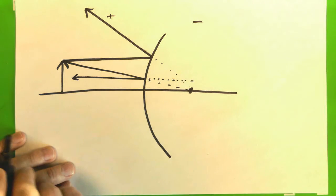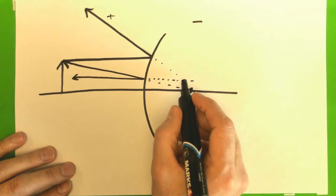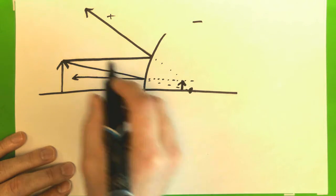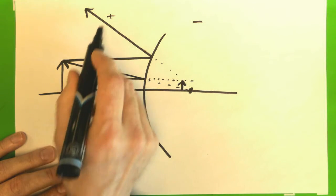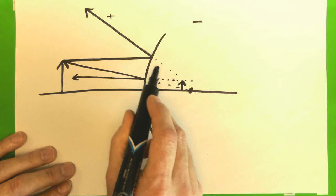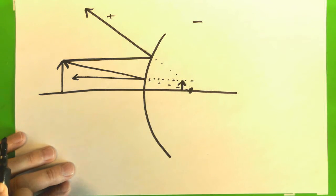And it would then converge, appearing as if it's coming from there. My eye would see these two rays, and it would appear as if they're coming from right there.